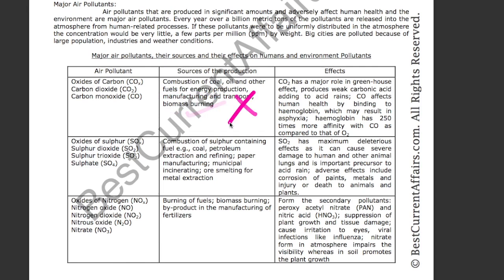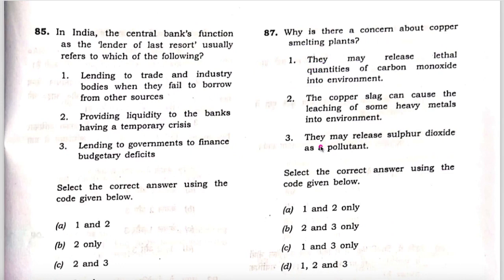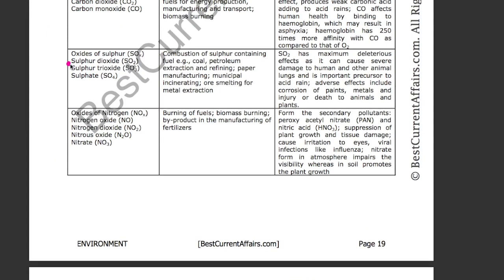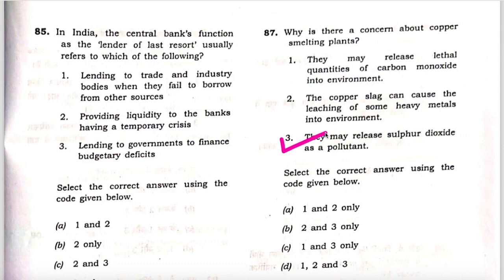Now take the third one: this smelting may release sulfur dioxide as a pollutant. It is correct — the air pollutant sulfur dioxide is mentioned here, and its sources include coal smelting for metal extraction. So smelting is there. Therefore, third is right and one is wrong. If you remove one from the given options, you are left with B.